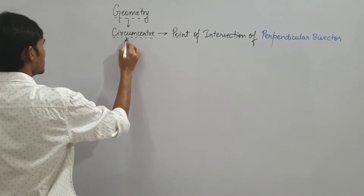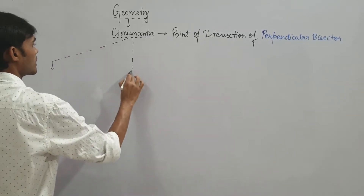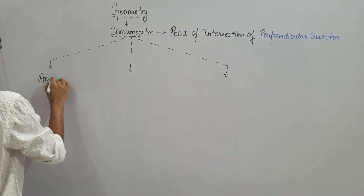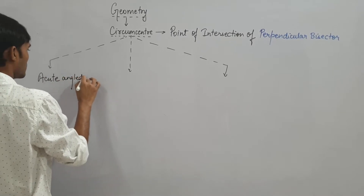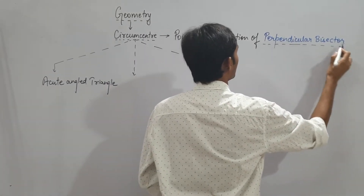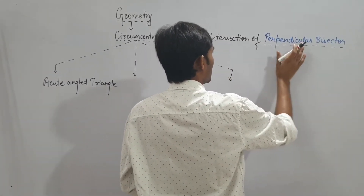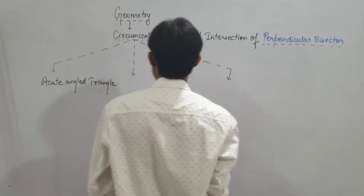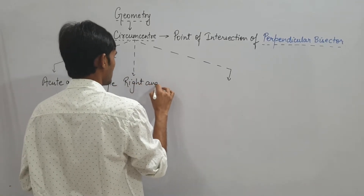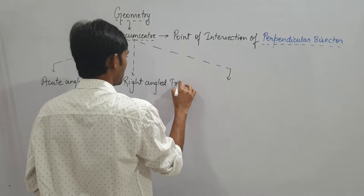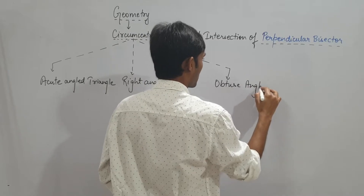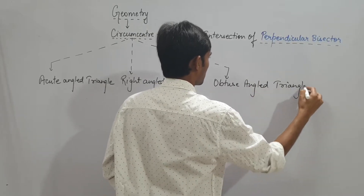As specified earlier, we have already discussed this. There are three types of triangles based on angle. The first being acute angled triangle. Today's full agenda is to understand the perpendicular bisector — 'lumb' (perpendicular) and 'aadha' (half) — which we call 'lambardhak' in Hindi. So: acute angled triangle, right angled triangle, and obtuse angled triangle.